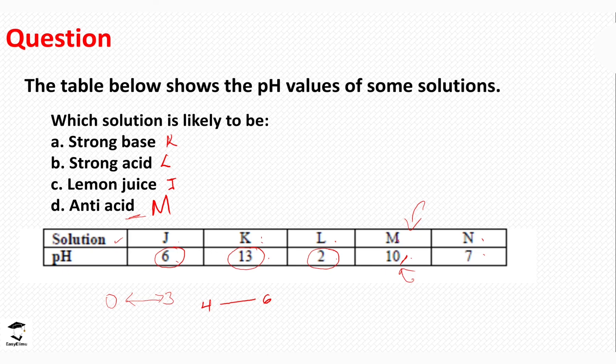To summarize: pH 0 to 6 represents acids — strong acids are between pH 0 and 3, and weak acids are between pH 4 and 6. pH 7 is neutral. pH 8 to 14 represents bases — weak bases are from pH 8 to 10, and strong bases are from pH 10 to 14. It is important to understand how the strength of acids and bases appears on the pH scale. See you in the next session!